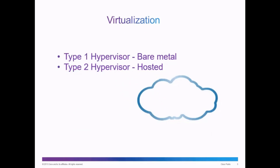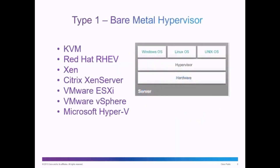There are two types of hypervisors used in virtualization: a Type 1 hypervisor, known as a bare metal hypervisor, and a Type 2 hypervisor, known as a hosted hypervisor. A Type 1 bare metal hypervisor is a virtualization server. The hypervisor is an operating system that's installed onto the hardware directly, after which virtual computers can be created.